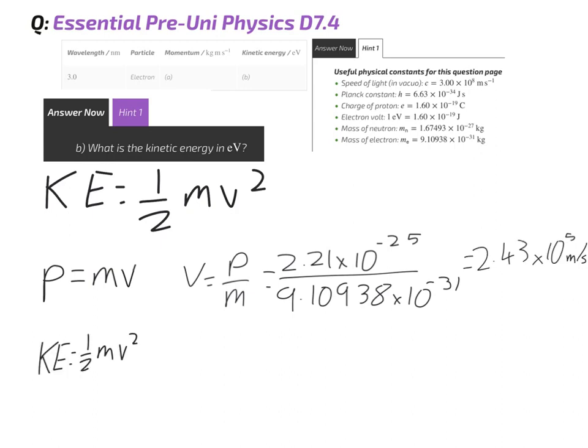Now, we've got everything we need to work out kinetic energy. We know the mass is 9.10938 times 10 to the minus 31 kilograms. And we know the velocity of our electron is 2.43 times 10 to the power of 5. Inputting our values, we get a kinetic energy of 2.7 times 10 to the power of minus 20 joules.